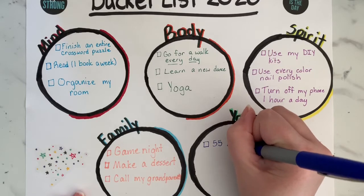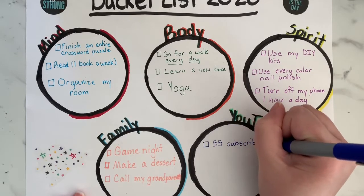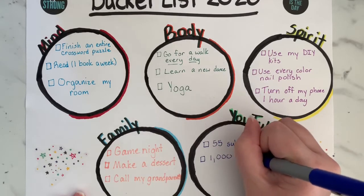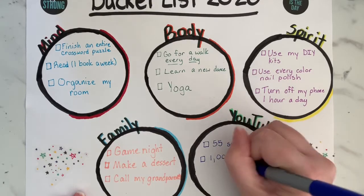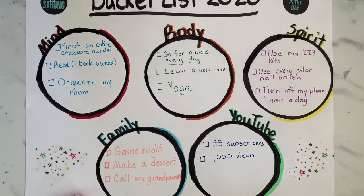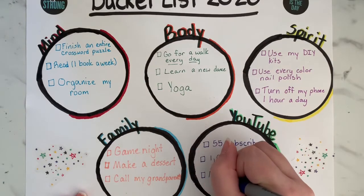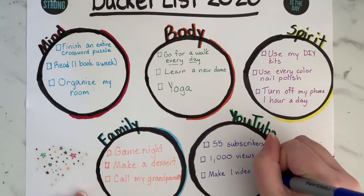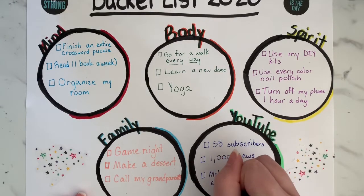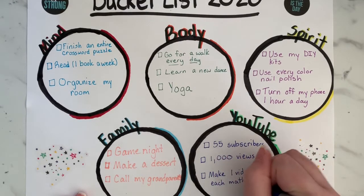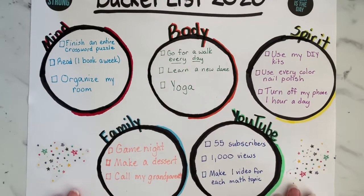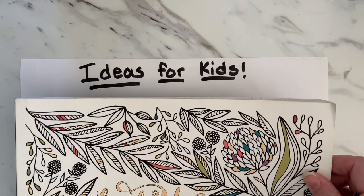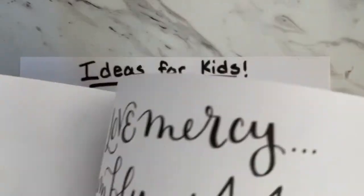For YouTube, I have a couple of goals. The first is to try to get to 55 subscribers, because that's how many kids are in fourth grade at our school. The second is to hit 1,000 views — I have almost 500 right now. The third is to try to make a video over every single math topic I've taught this year, so I feel productive.